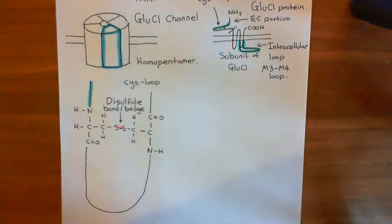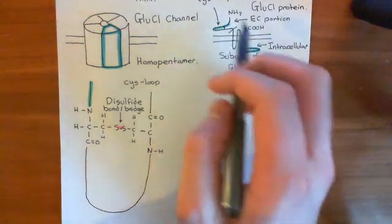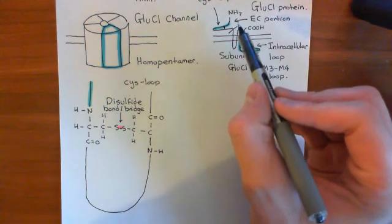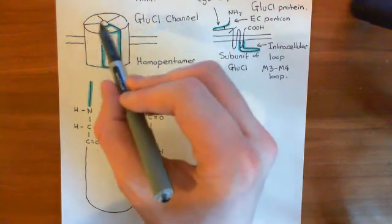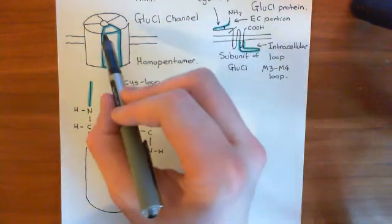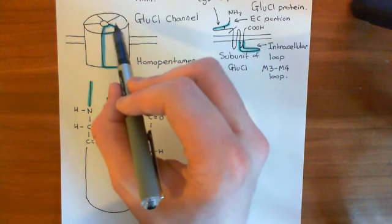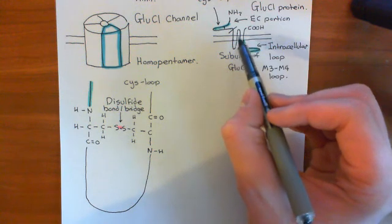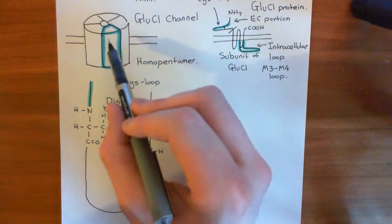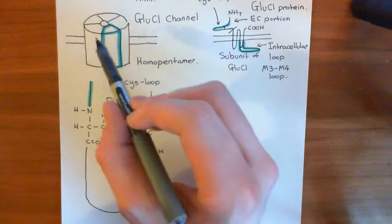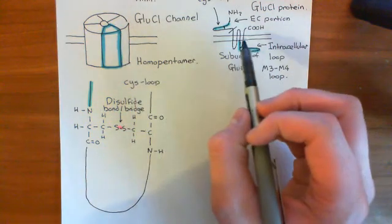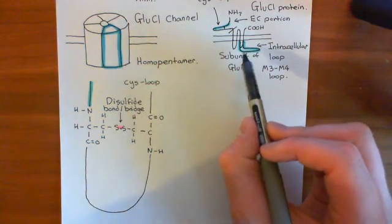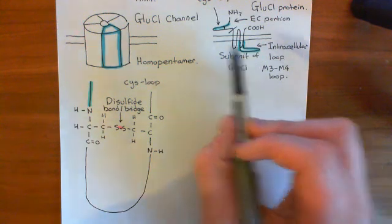Let's now study how this receptor subunit sits in the entire structure of the channel. The extracellular domain is the portion involved in ligand binding, and the five extracellular domains of each subunit making up the homopentamer together form the extracellular domain of the GluCl channel. The four membrane-spanning alpha helices make up the transmembrane domain, and the intracellular loop makes up the intracellular domain.